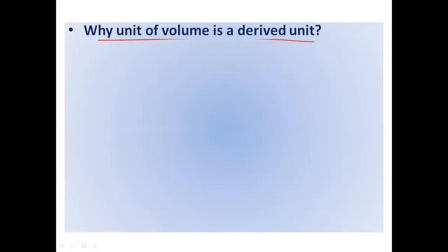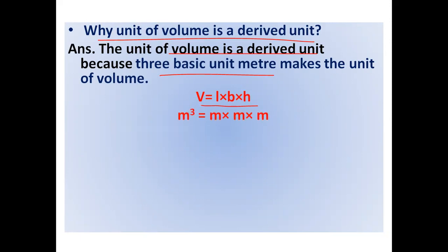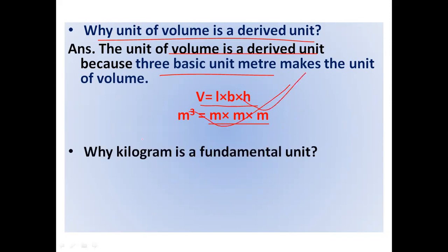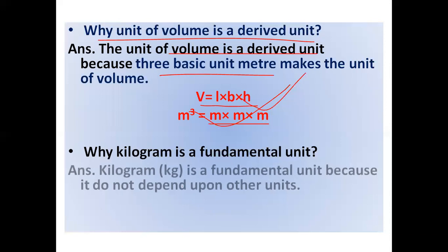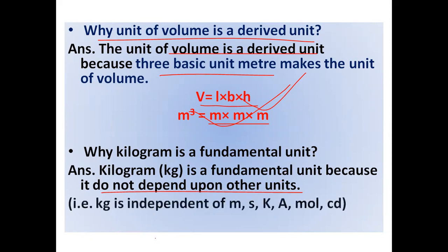Why is the unit of volume a derived unit? The unit of volume is a derived unit because three basic units of meter make up the unit of volume — volume equals length times breadth times height, so the unit is cubic meter (m × m × m). Why is kilogram a fundamental unit? Kilogram is a fundamental unit because it does not depend upon other units — it is independent of meter, second, Kelvin, Ampere, Mole, and Candela.